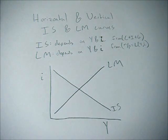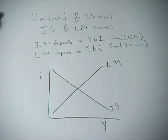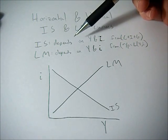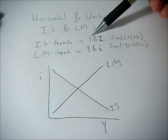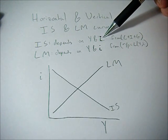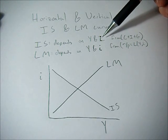This video is going to go over the tricky circumstance of when you can get vertical or horizontal IS or LM curves. The whole trick here is to remember that the IS and the LM equations depend on both Y, GDP, and little i, the interest rate.